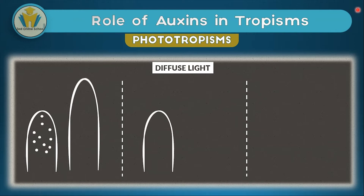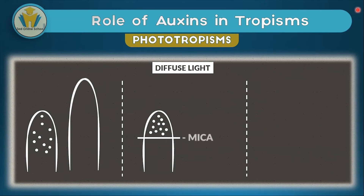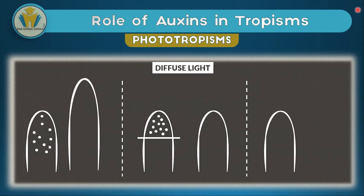In the second experiment, to prove that auxins are truly the substances affecting growth, the auxins are blocked from moving to the other part of the shoot. This is done by inserting a piece of mica — a material that is impermeable to chemical substances, specifically auxins. After this, the growing shoot is not seen to grow, because auxins have not diffused to the other part of the tip to bring about uniform growth. This proves that auxins are important for any shoot to grow.